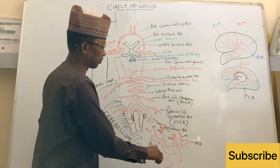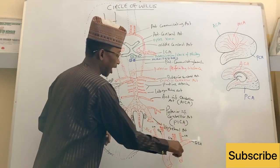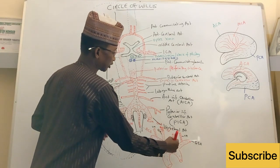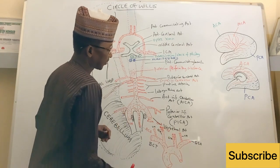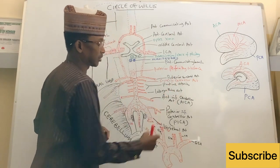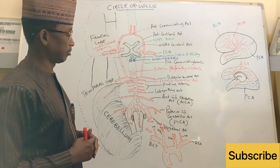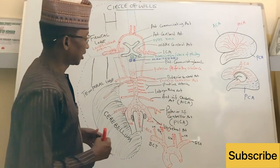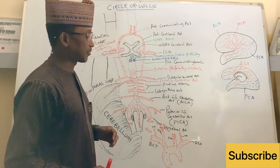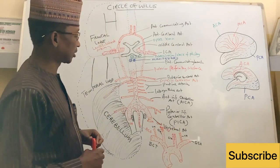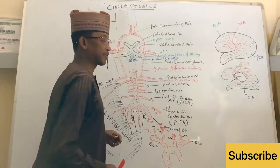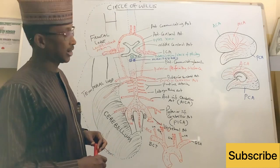If we take for example the arch of the aorta, from the left side of the arch of the aorta, there are two great arteries that spring up from it. The first one is the left common carotid artery, and the second one is the left subclavian artery.